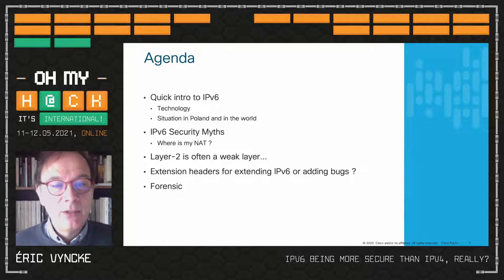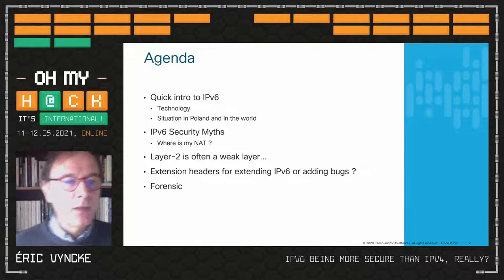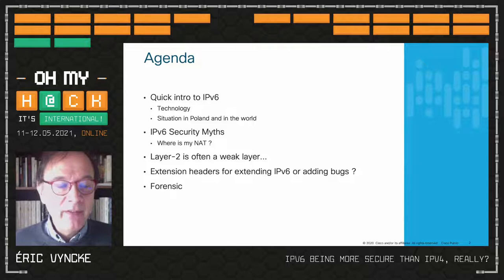Notably, where is my NAT? Because everyone knows that network address translation is a key security feature, right? Let me laugh on this. We'll talk again on Layer 2. I wrote a book on Layer 2 security many years ago on IPv4 and IPv6. The issue is that Layer 2 is often the weak layer because people do not pay attention to it.